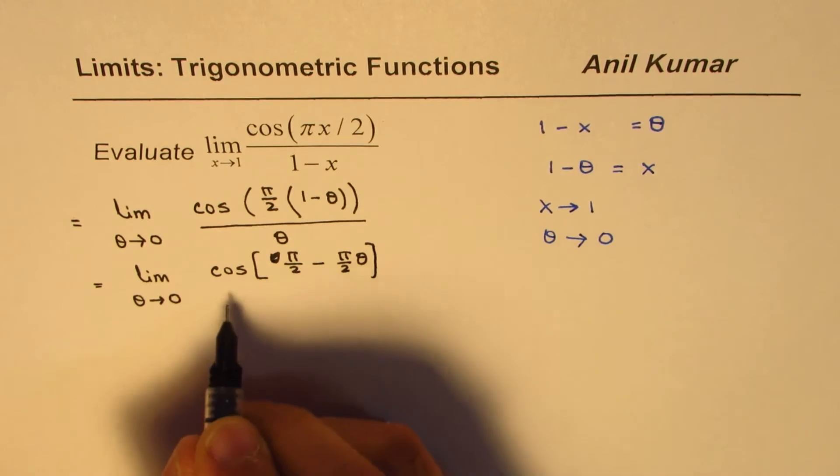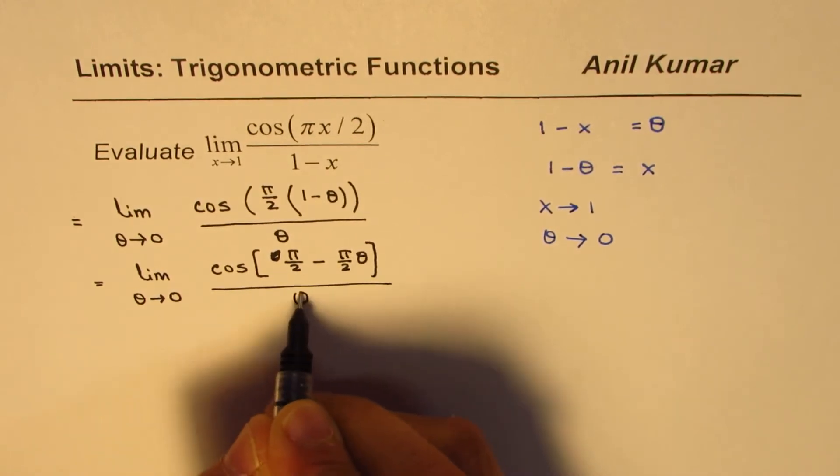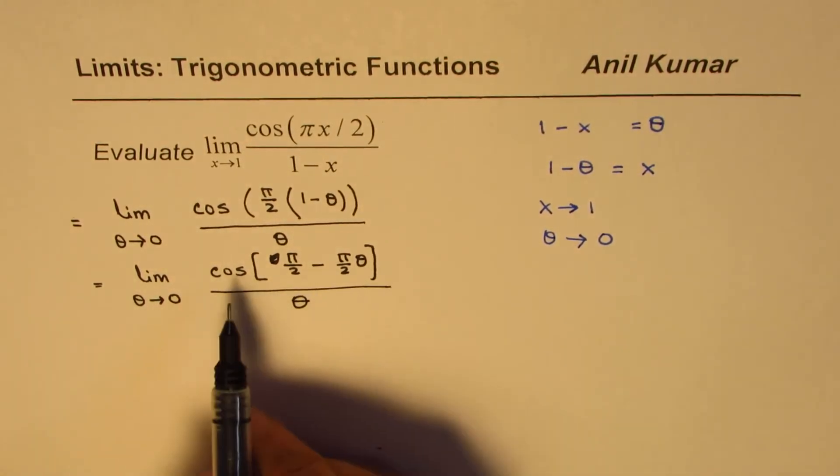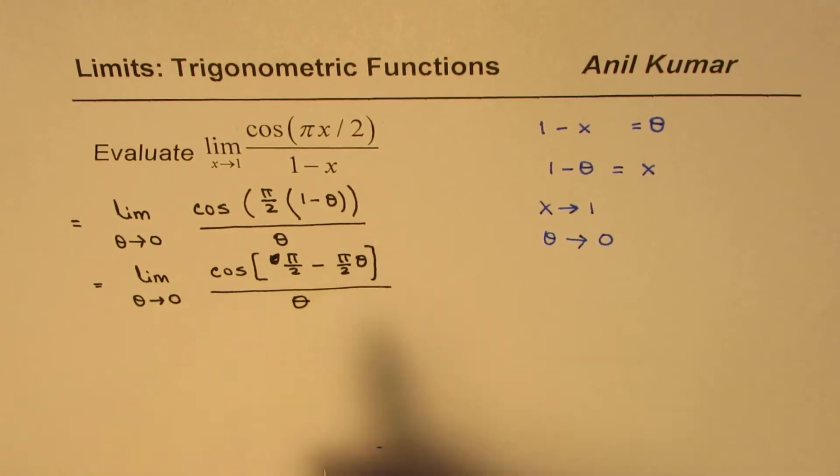So once you open the bracket, you could write like this. Now, what is cos(π/2 minus an angle)?